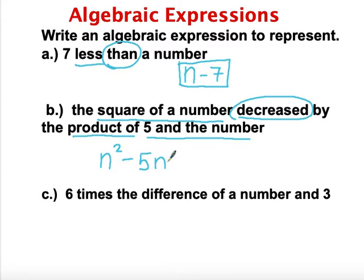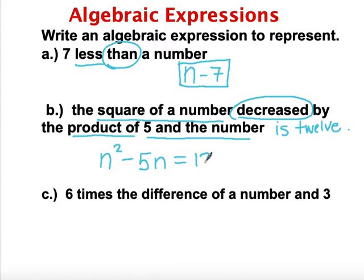These are algebraic expressions. Now we're going to use equations in a little bit. An equation would include having some kind of equal sign. So if we add 'is 12' to that expression — the square of a number decreased by the product of 5 and a number is 12 — that turns the expression into an equation, and now it would be solvable for us.